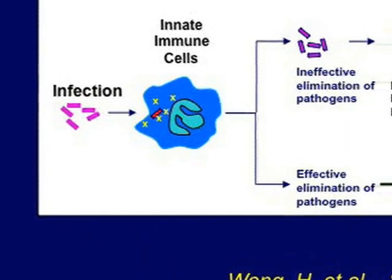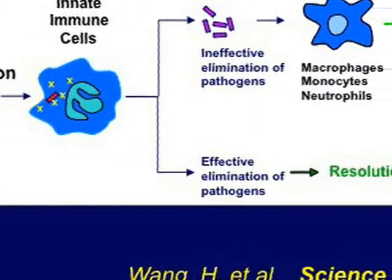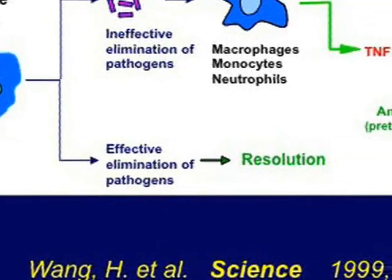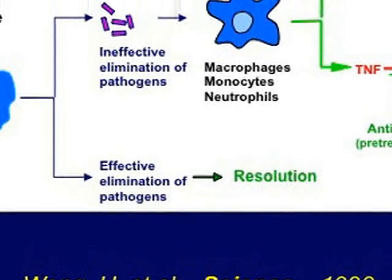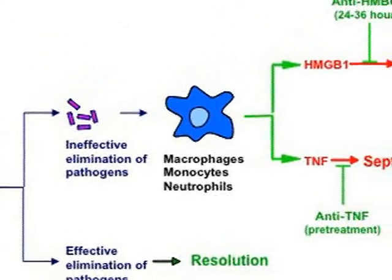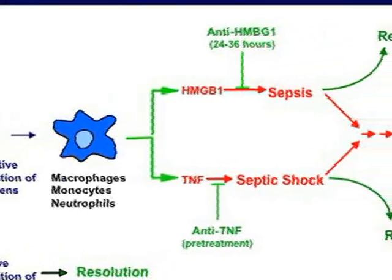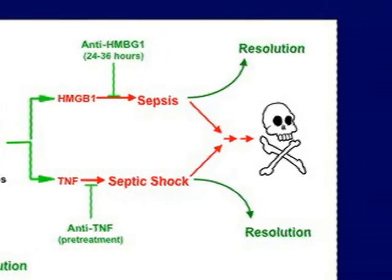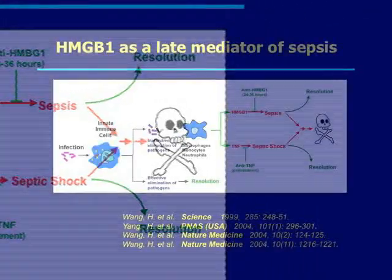In response to infection, the immune cells try to kill the invading pathogens by ingesting and killing them. If the invading pathogens can be effectively eliminated, inflammation can be normally resolved. However, the ineffective elimination of pathogens could lead to systemic inflammatory responses, as manifested by overproduction of many cytokines such as TNF and HMGB1.